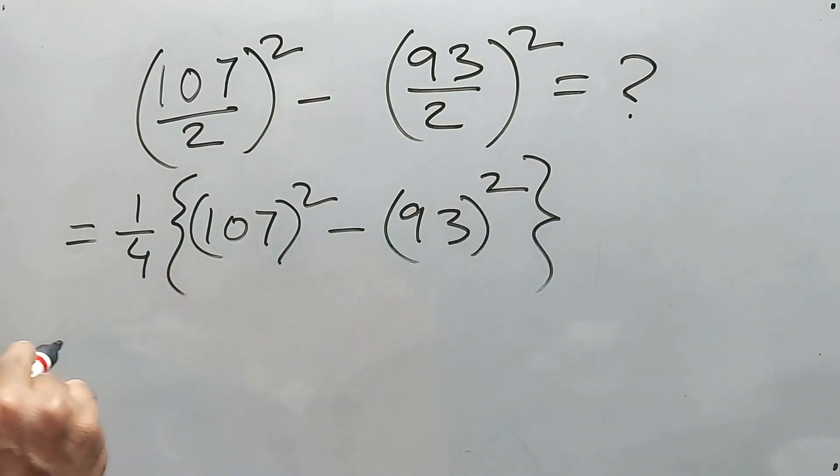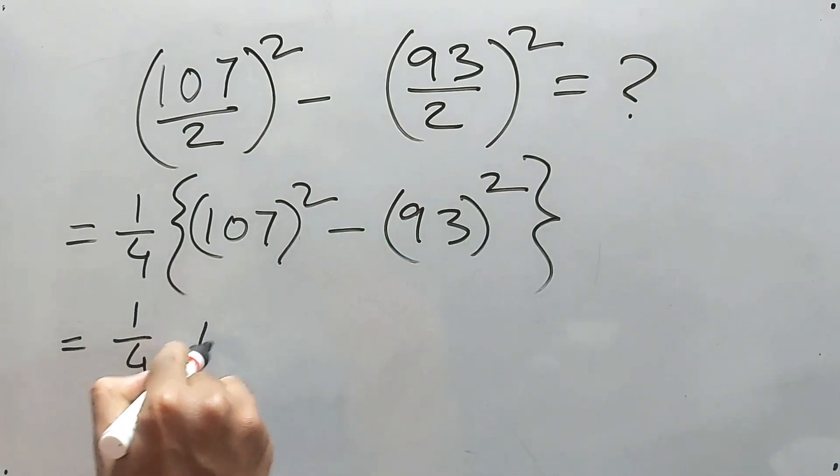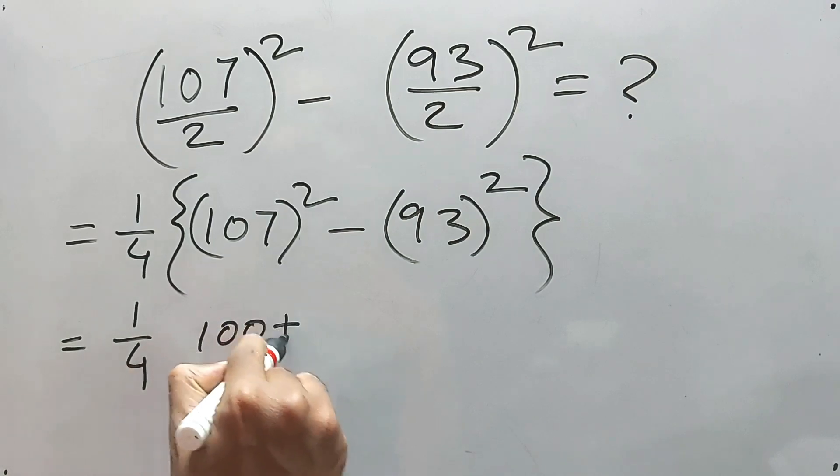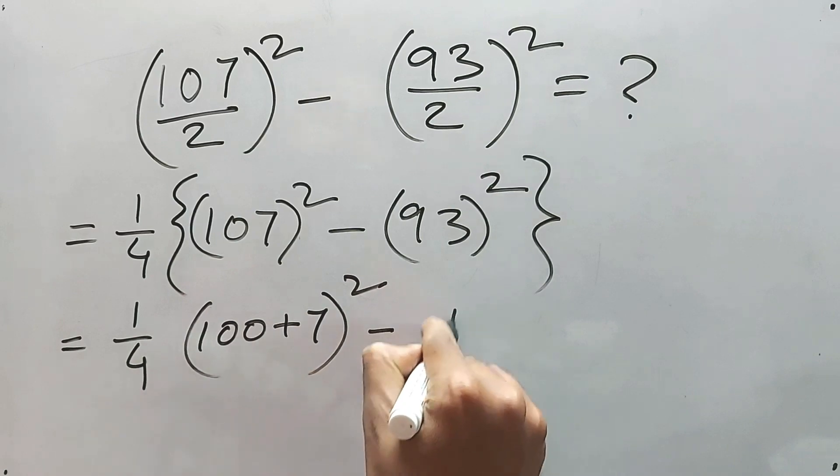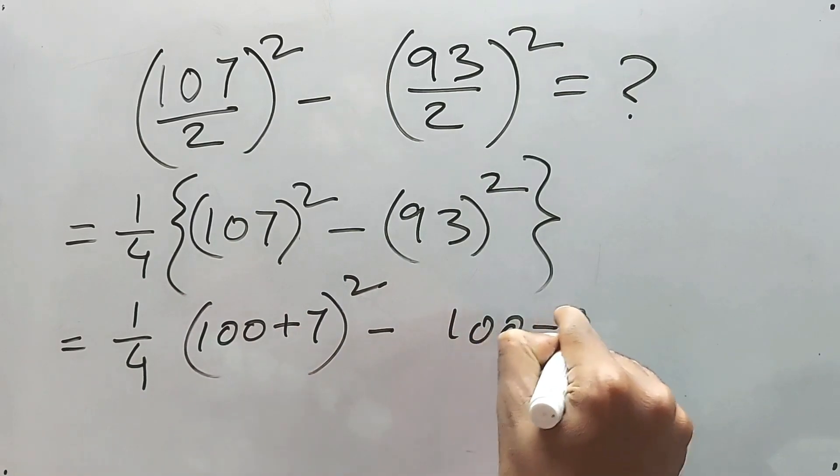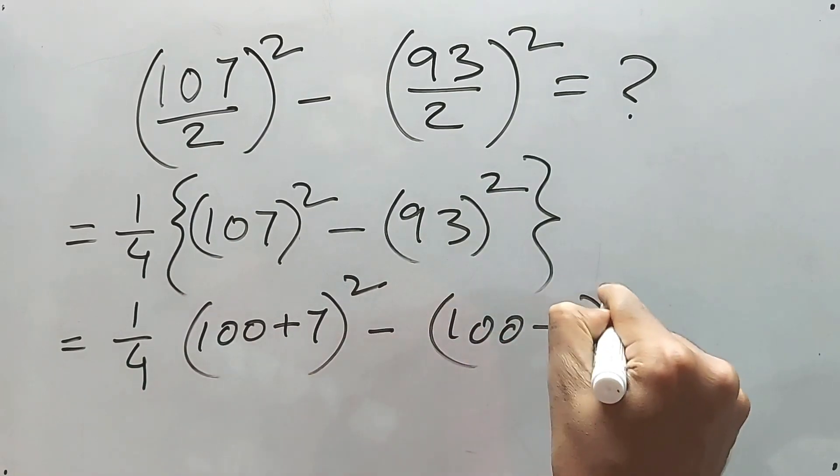Now what is this? Basically, 1/4 will be outside. (100 + 7)² minus (100 - 7)², right?